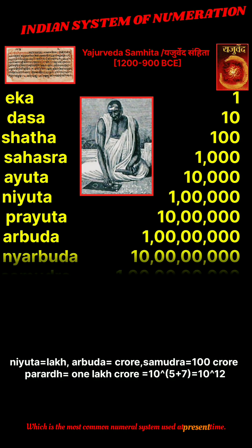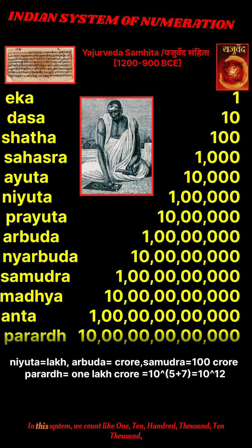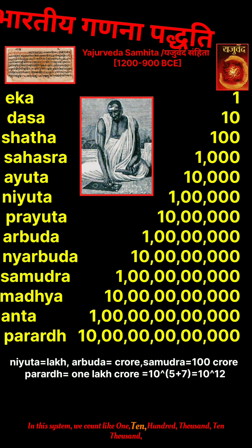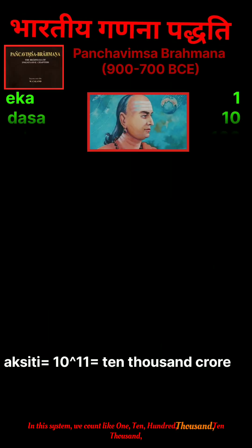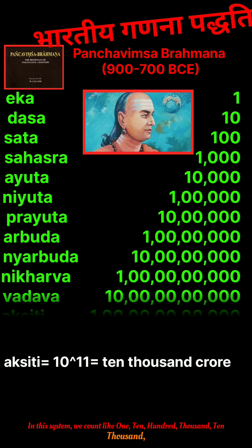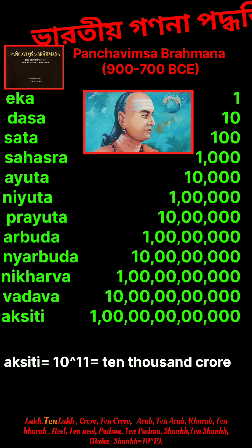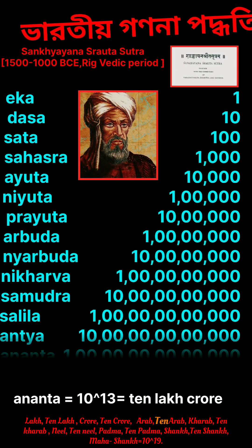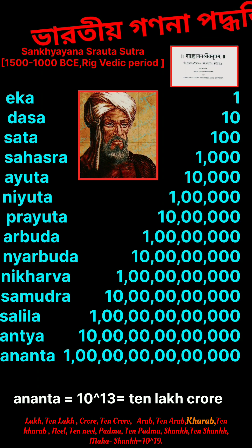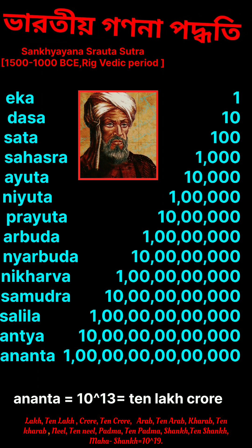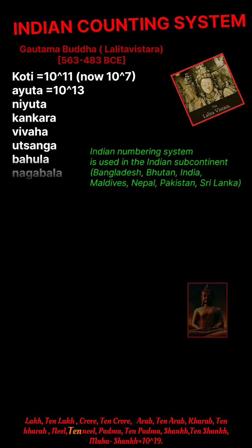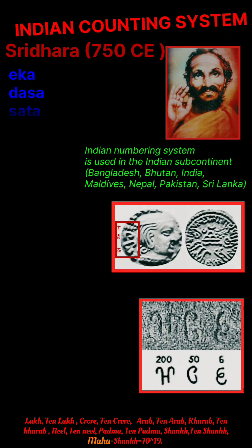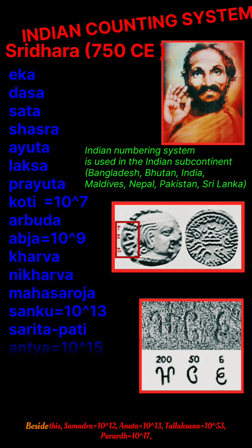In this system we count like: one, hundred, thousand, ten thousand, lakh, in a cool, in cool, arab, in a lot of arab, in carabh, non tenny, padma, in padma, sunk, in sunk, no one. Sang is equal to 10 to the power 19.